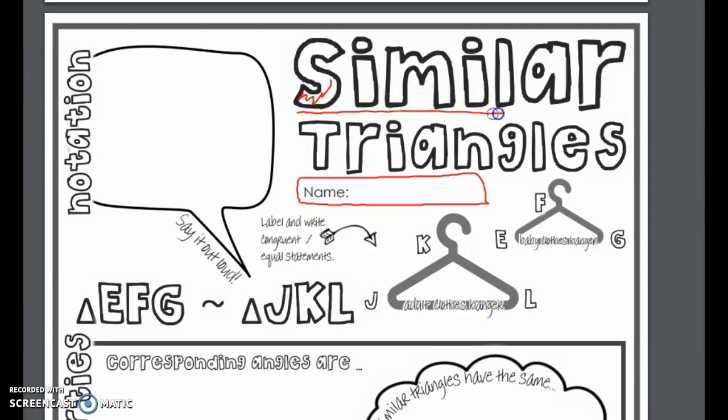But today we are talking about similar triangles. We've talked a lot about similarity, but today it's just about triangles. So let's talk first about how we would say this out loud. If we were talking about these two triangles over here, and that is what we're talking about today.